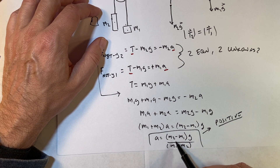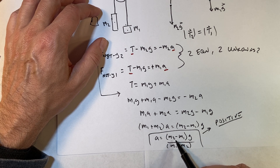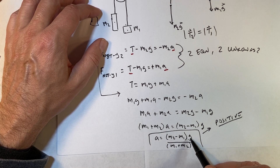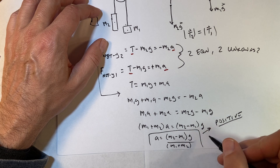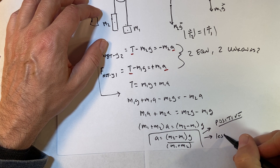If I look at the fraction: the stuff on the bottom — since I'm adding the masses together — is going to be greater than the stuff on the top. So it's going to be less than g. So I'm happy, because that's less than g — that's your answer.